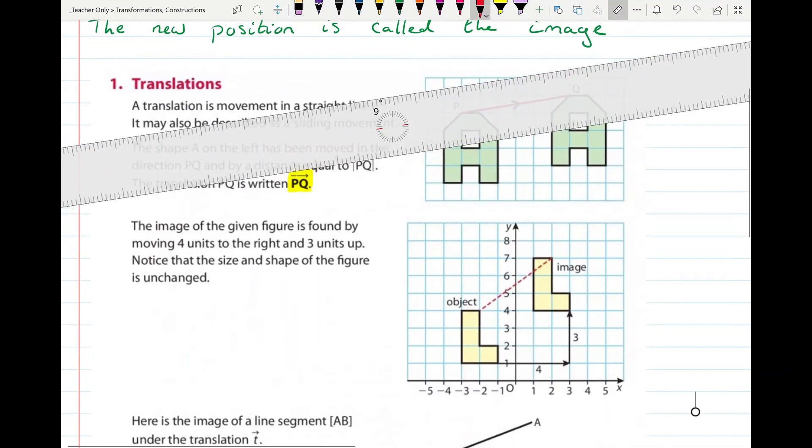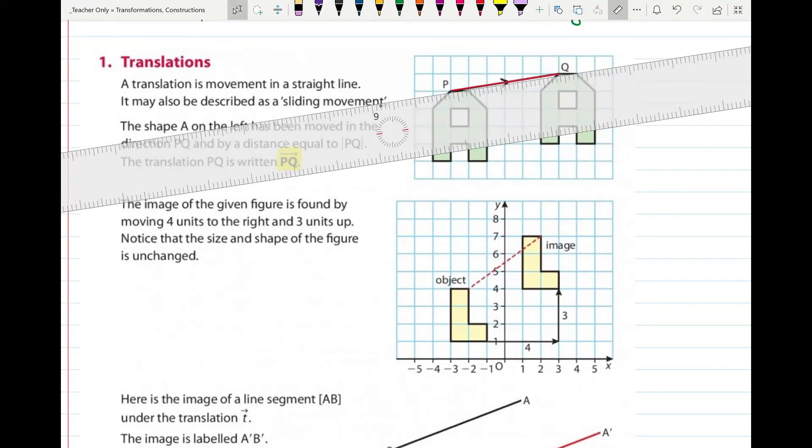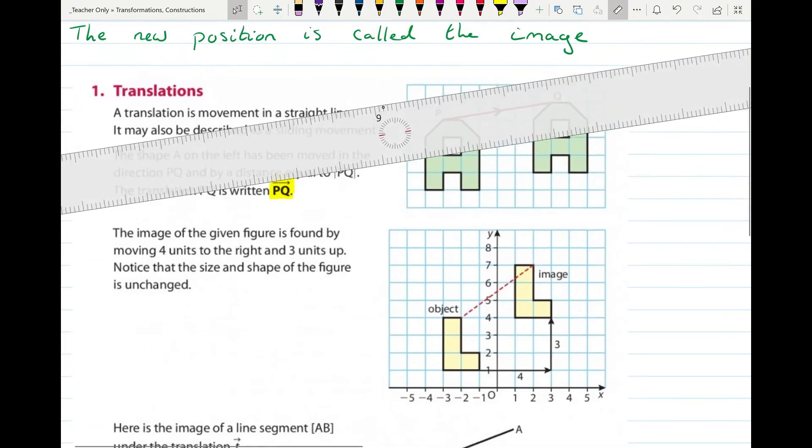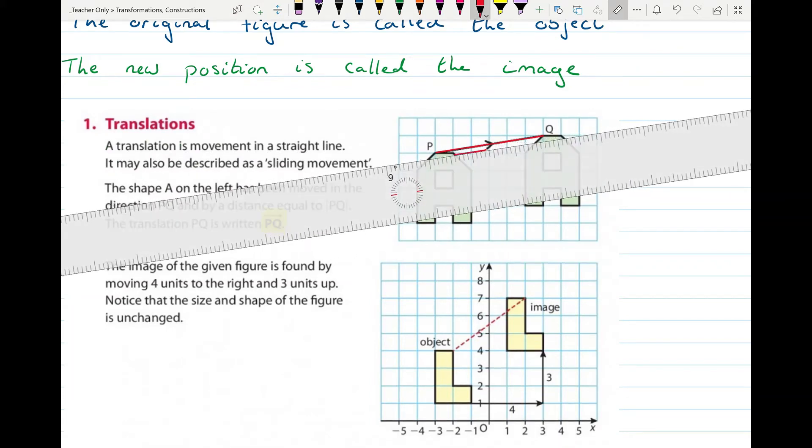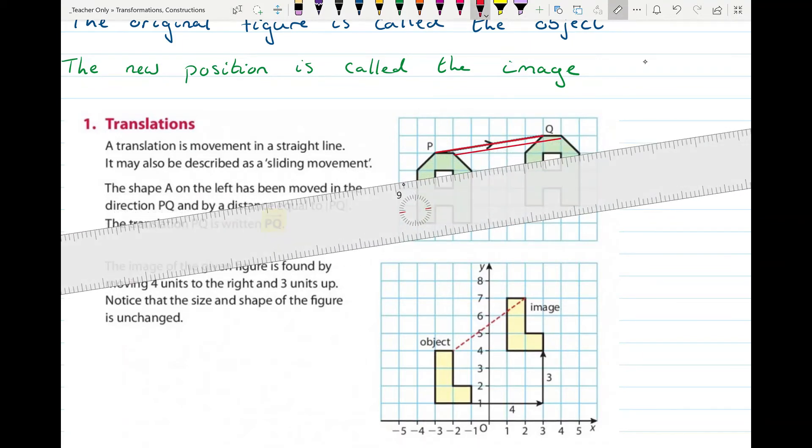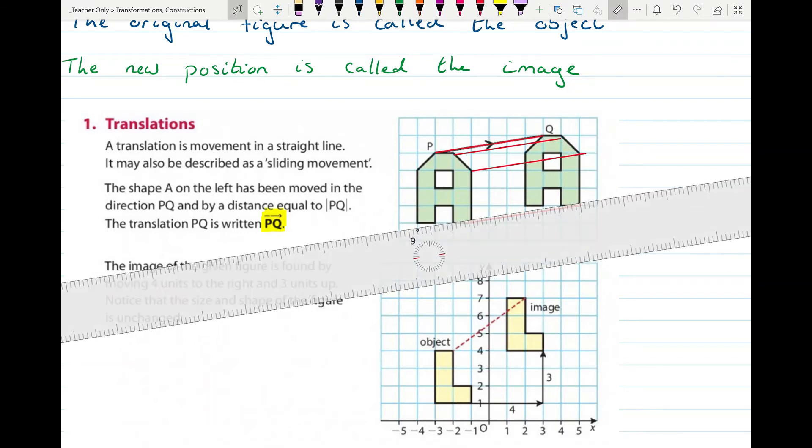Now just knowing that much information, we can move the entire shape. Because all of the other points will go the same distance now, once I don't move my ruler. OK, so the next point there is this one. We can see that this one will go from there to there. The next corner will go from there to there. The corner at the bottom.